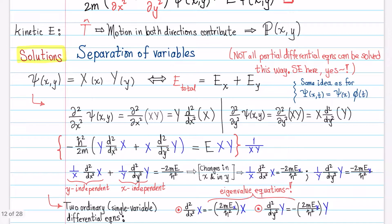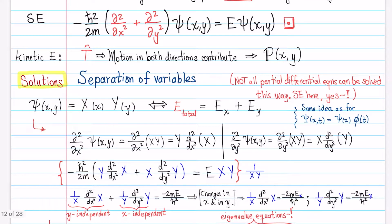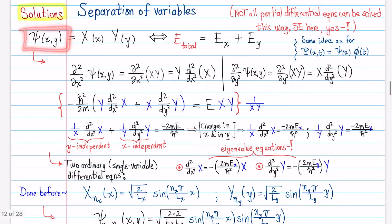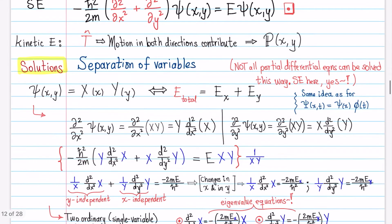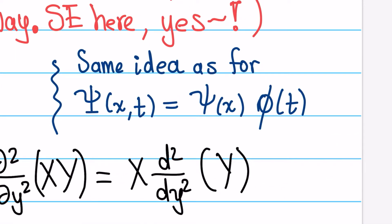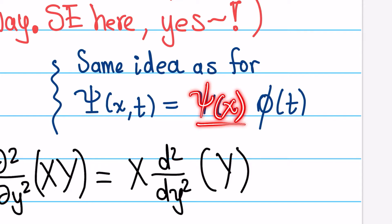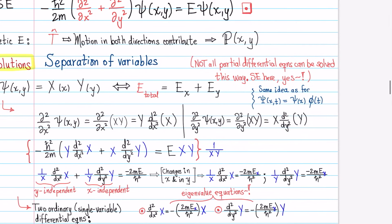How do we solve this problem? Well, there's a technique in mathematics that we call separation of variables. Important to note before I go into that is that not every single differential equation can be solved this way, but for this one we know that this is something that we can do. In principle, we have a wave function that depends on both coordinates x and y, and we want to express that as a product of two functions, each of which depends only on one of the coordinates, such that the total energy is going to be the sum of contributions from the particle moving in the x direction and the particle moving in the y direction. This is basically the same idea that we used whenever we separated the time-dependent wave function into a part that depends only on position and a function that depends only on time.